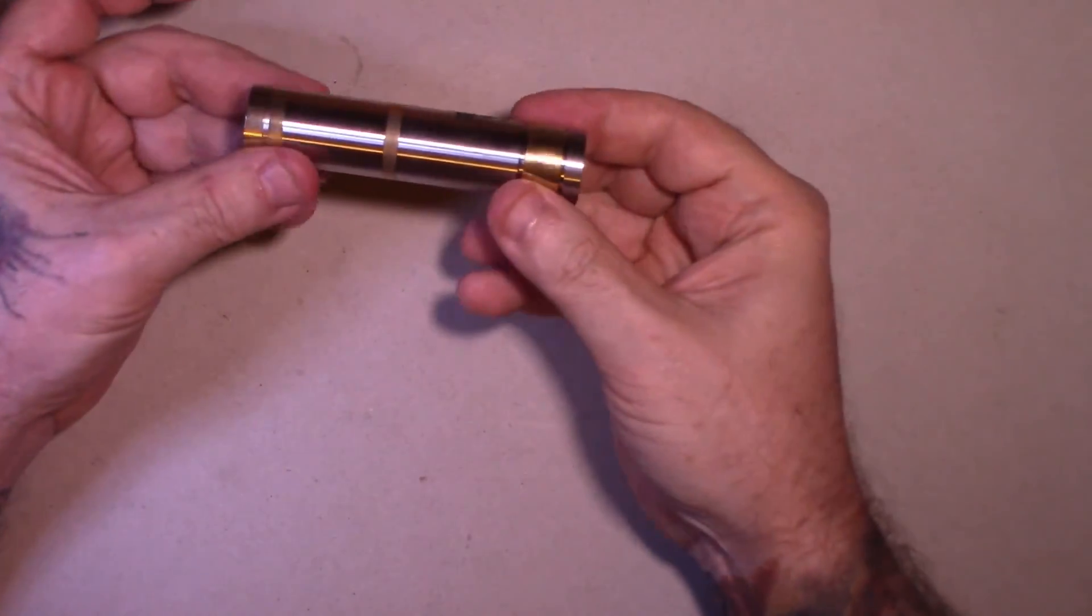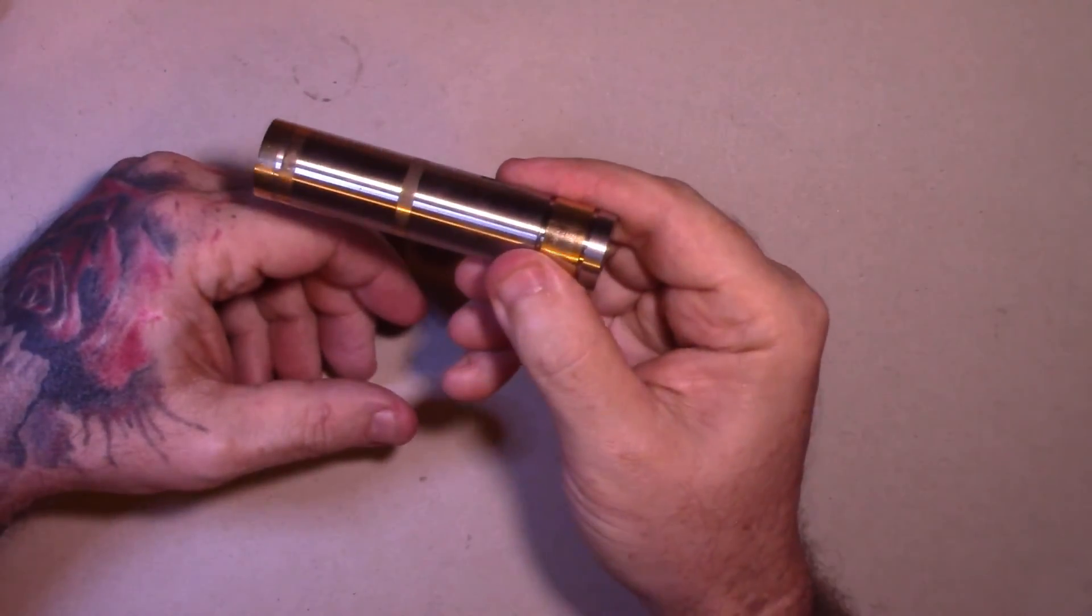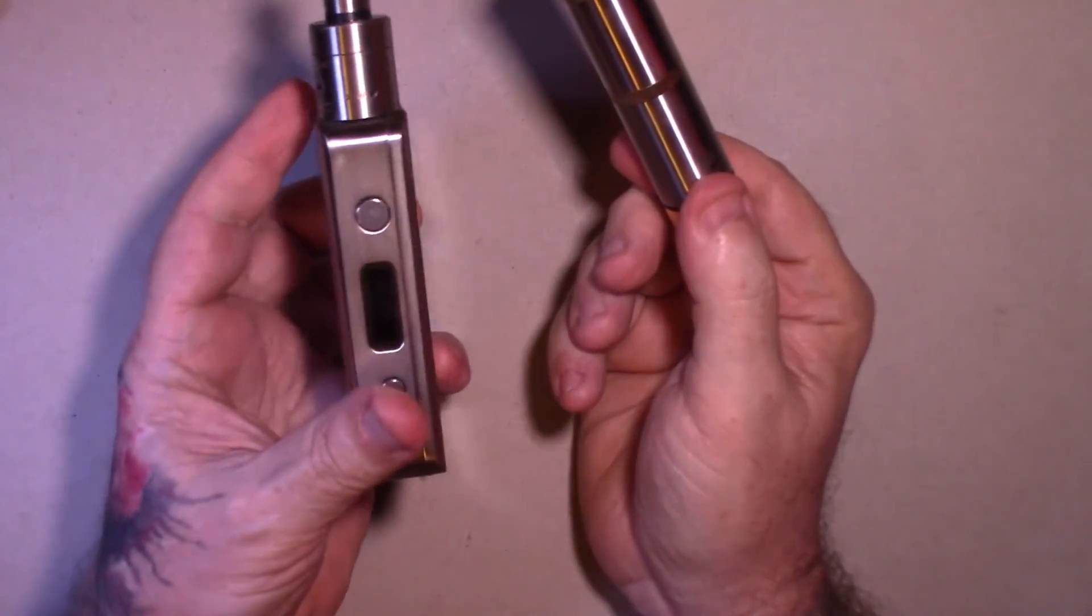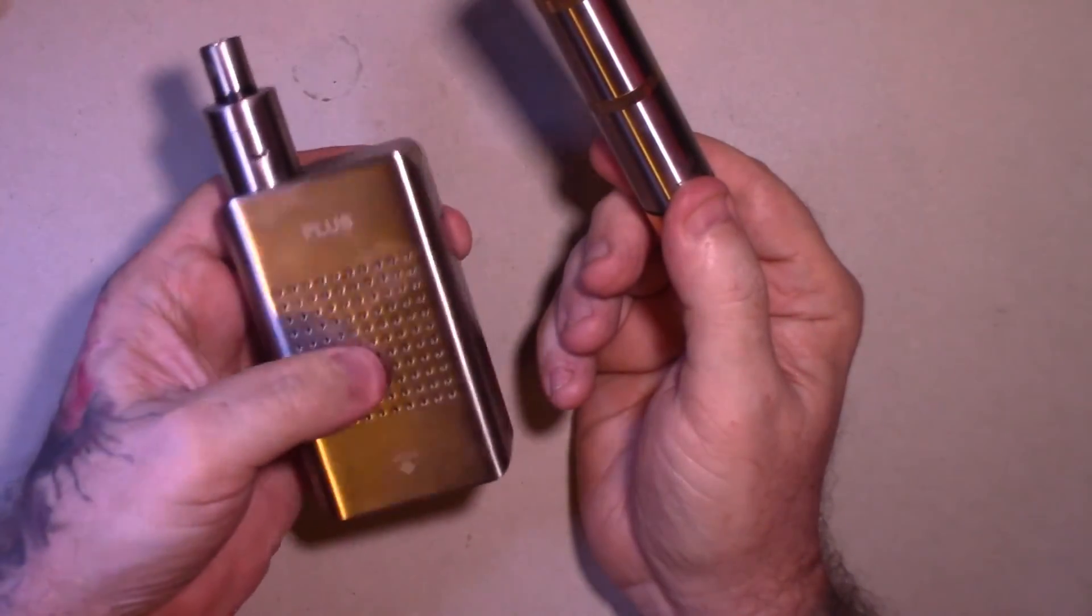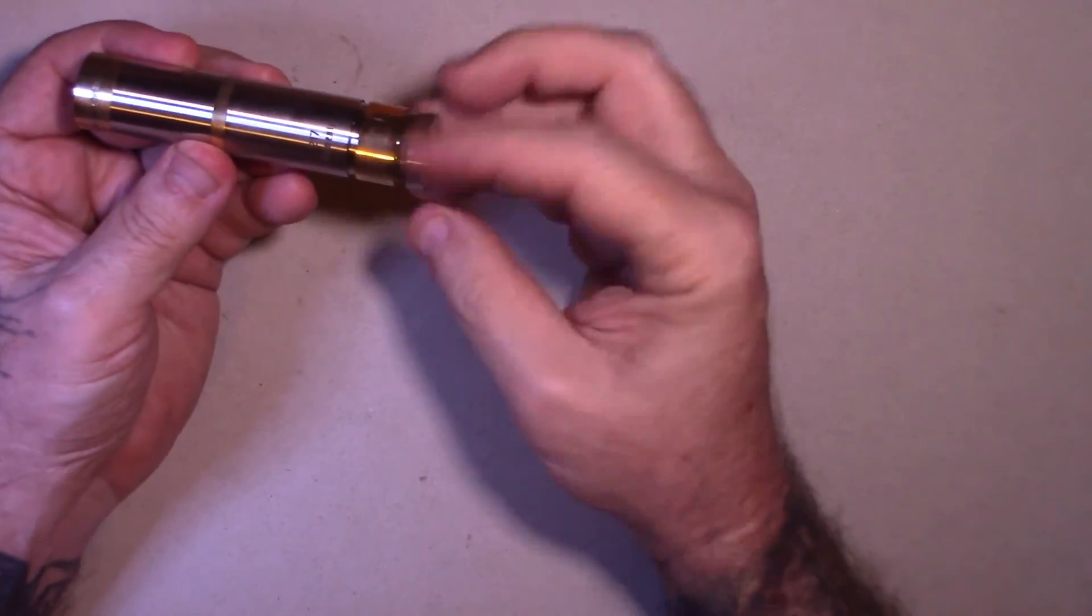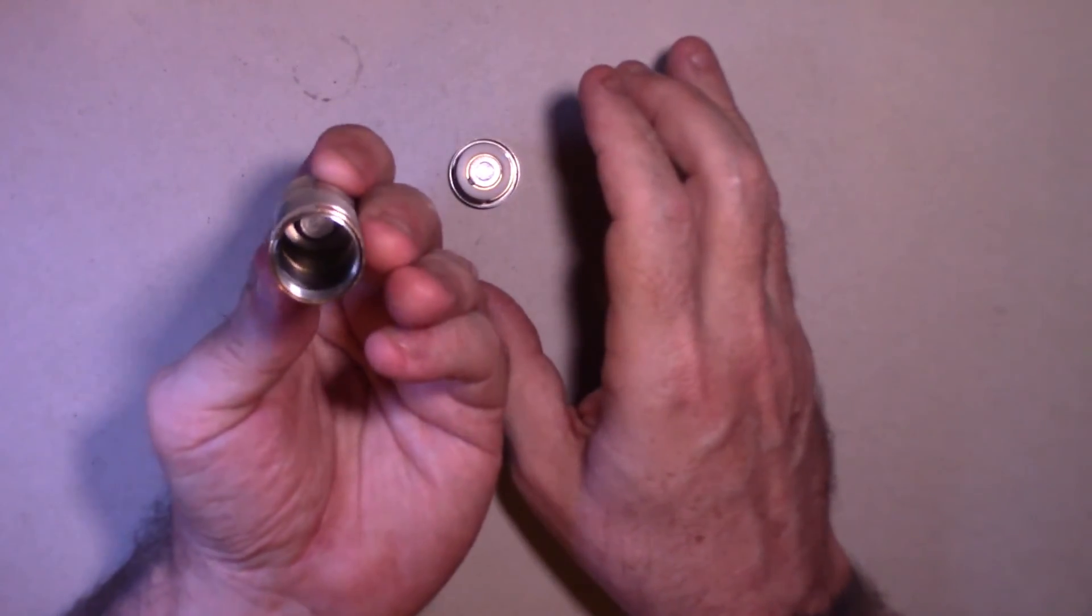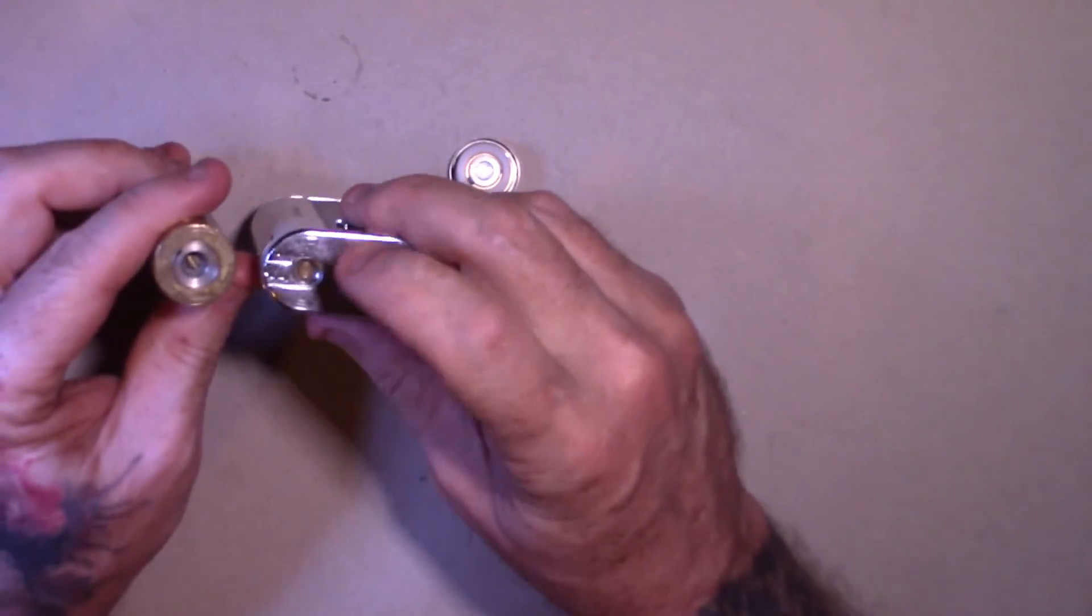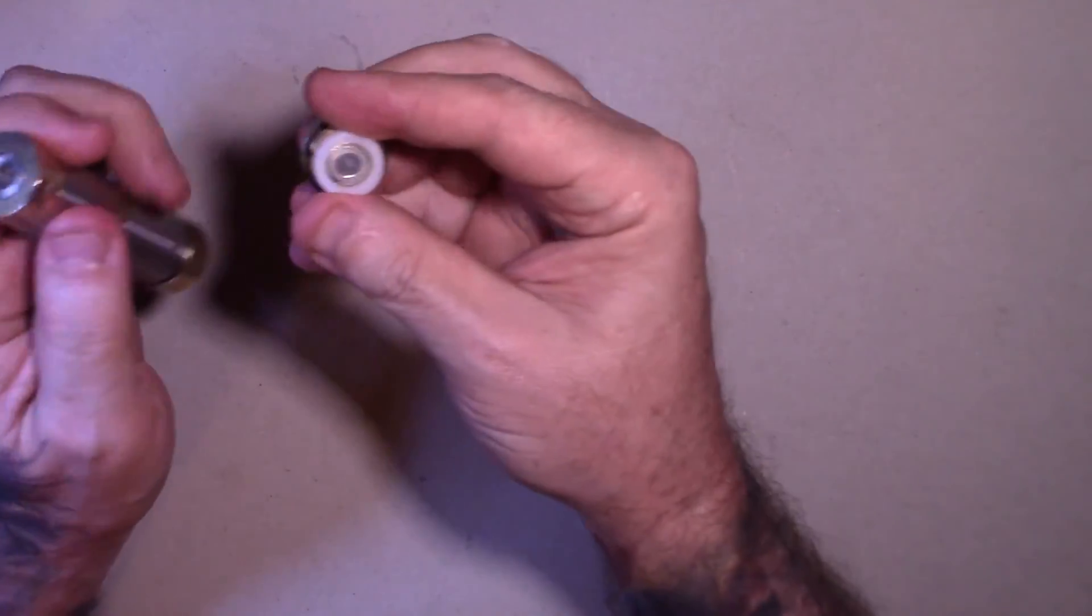Now you have an unregulated mod. This is the tube style. They also come in ones that look like this - this is not an unregulated, this is a regulated mod, but they have ones that look like this, a box mod, unregulated box mod. But basically, all it is - this one is a tube. That is all it is. There is nothing in there. It has the same connector as your regulated mods up here, and on the bottom is a button.